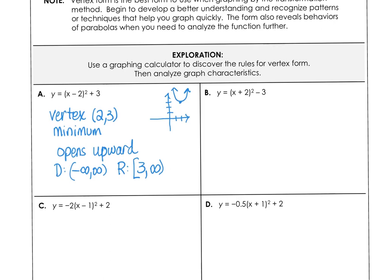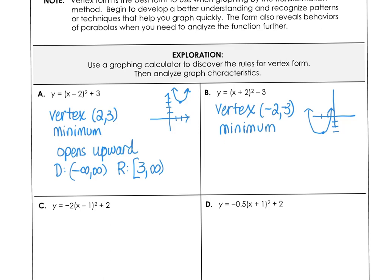For letter B, (x plus 2) squared minus 3 shifts the parabola 2 units left and 3 units down. Since a is positive, it still opens upward, with a minimum vertex at negative 2, negative 3. The domain is all reals, and the range goes from negative 3 to positive infinity.